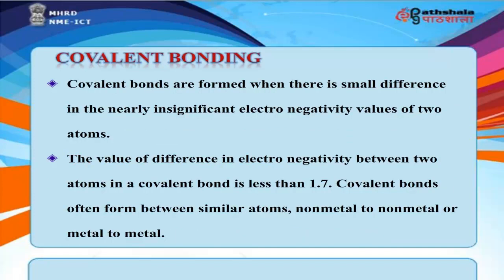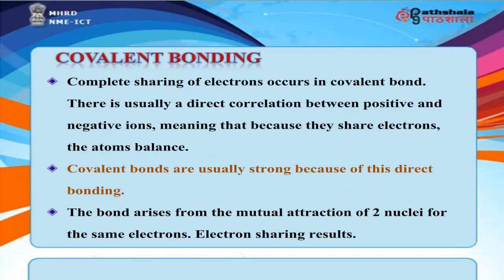Covalent bonds are formed when there is a small or nearly insignificant difference in the electronegativity values of two atoms — less than 1.7. Covalent bonds often form between similar atoms: non-metal to non-metal, or metal to metal. Complete sharing of electrons occurs in a covalent bond, and because the atoms share electrons, they balance. Covalent bonds are usually strong because of this direct bonding. The bond arises from the mutual attraction of two nuclei for the same electrons, resulting in electron sharing.